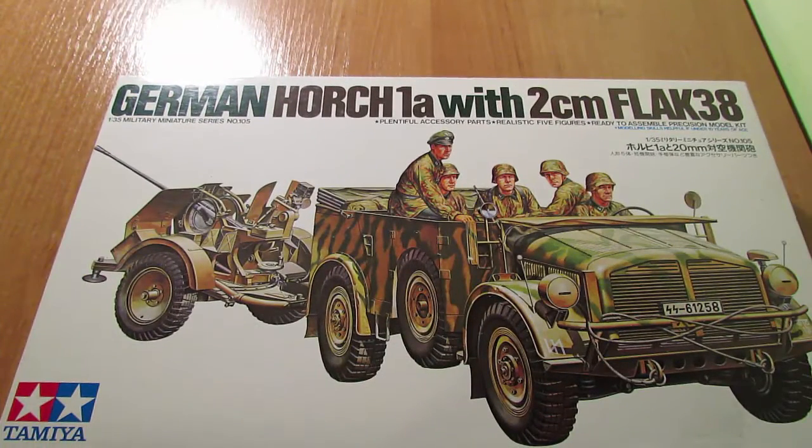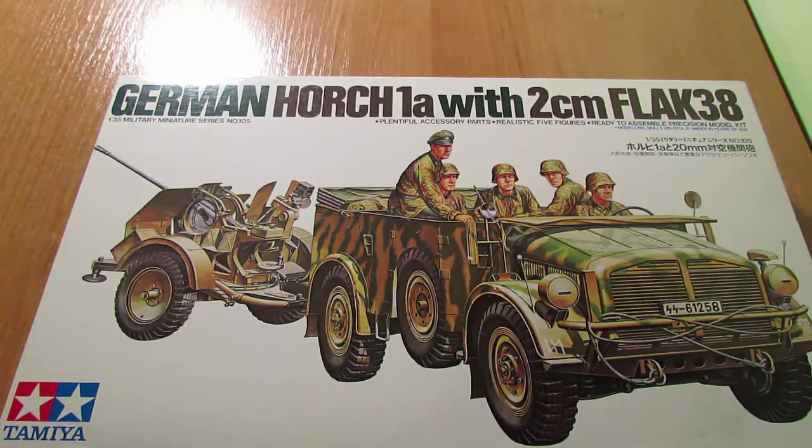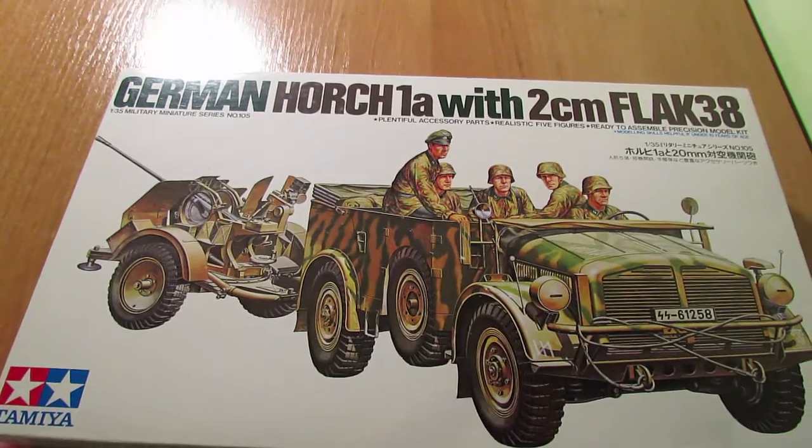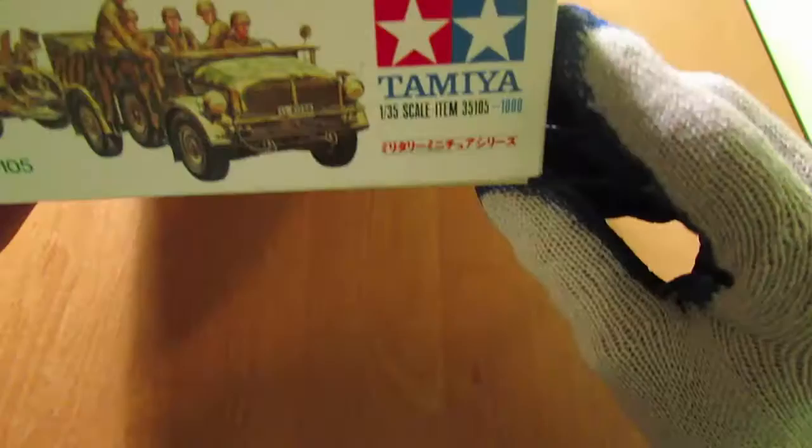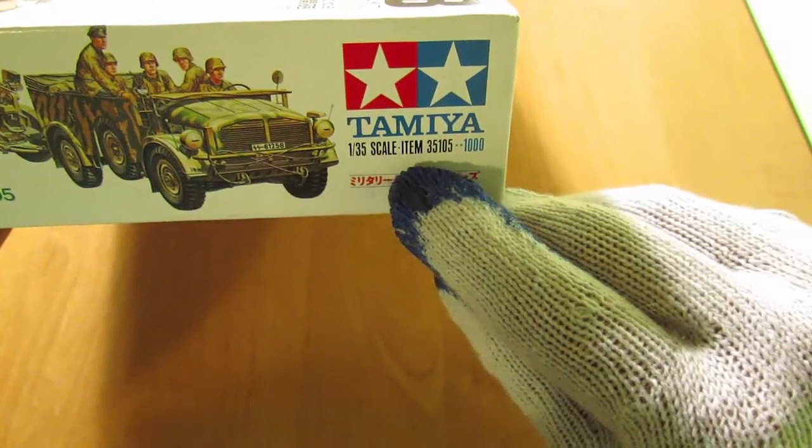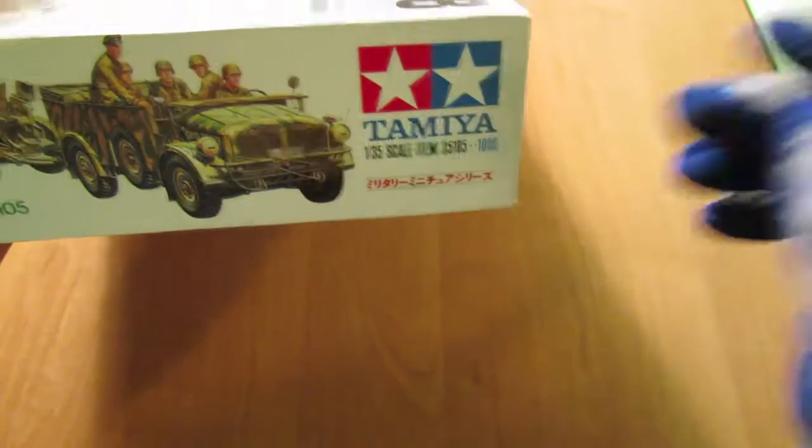Witam was bardzo serdecznie w unboxingu. Dzisiaj prezentuję model Tamiya w skali 1 do 35. Jest to model German Horch 1A z działkiem dwucentymetrowym Flak 38. Jest to oczywiście działko przeciwlotnicze. Numer katalogowy modelu to jest Tamiya 1-35, numer 35105.